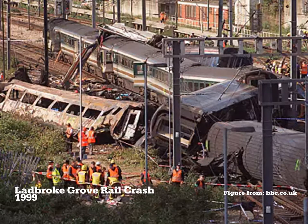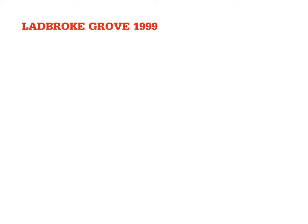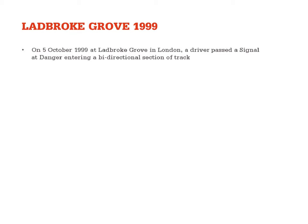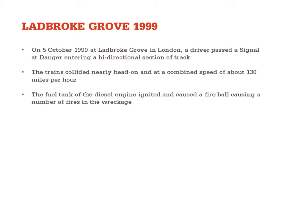However, in 1999 we had another incident — the Ladbroke Grove rail crash. In October 1999 at Ladbroke Grove, a driver passed a signal at danger entering a bi-directional section of track where trains can run in both directions. The trains collided nearly head-on at a combined speed of about 130 miles per hour. The fuel tank of the diesel engine ignited and caused a fireball, creating a number of fires in the wreckage. A total of 31 people were killed and more than 520 were injured.